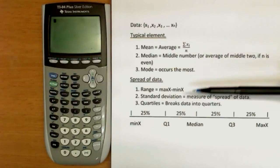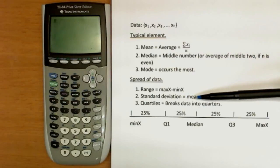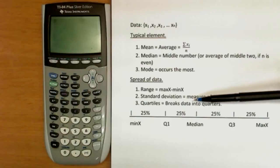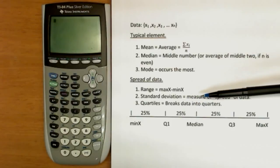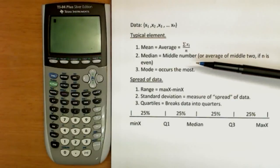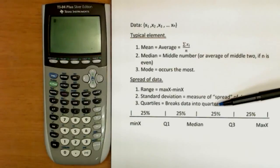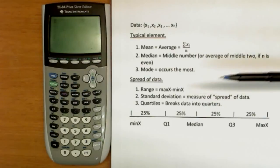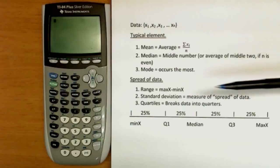So the most commonly used one is the standard deviation. And mathematically, it's a tad bit complex. We're going to find them on the calculator, actually, or on Excel. And we'll just consider it as sort of an average spread from the mean, from the center of the data. So if the standard deviation is 10, then we kind of think the average element is around 10 units away from the center.